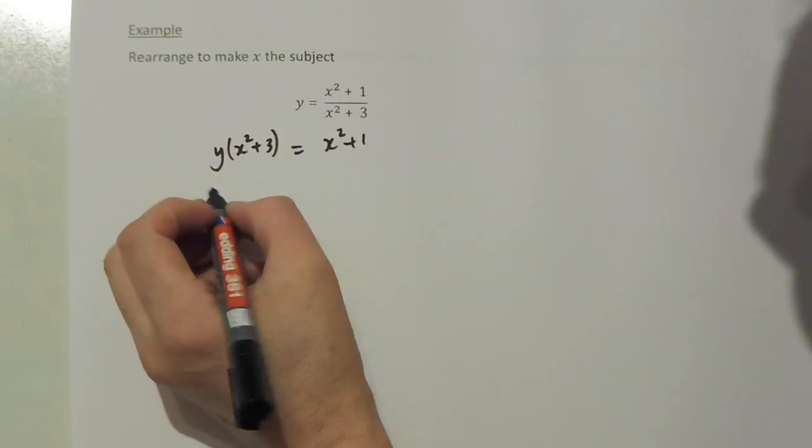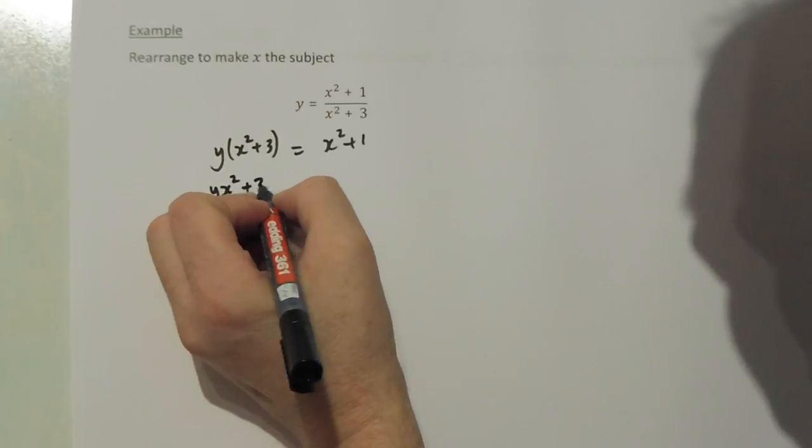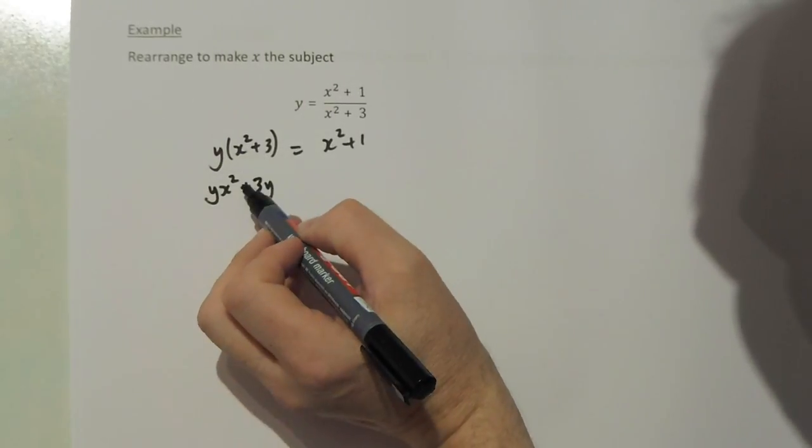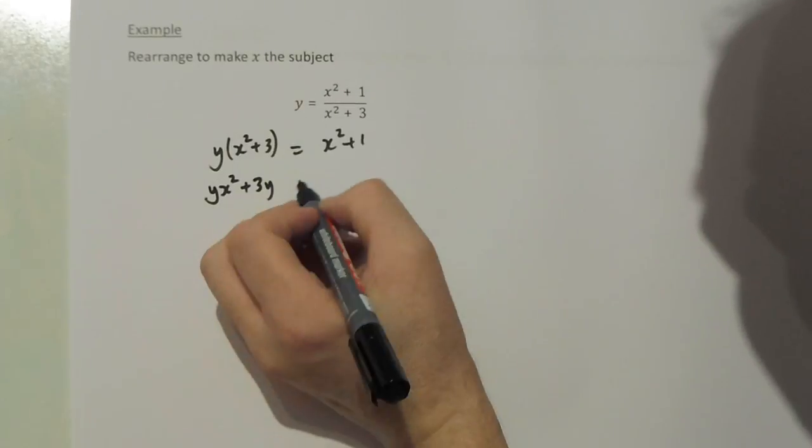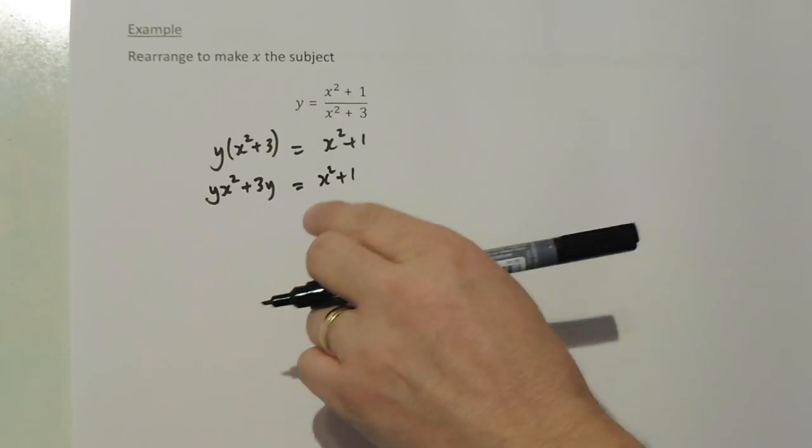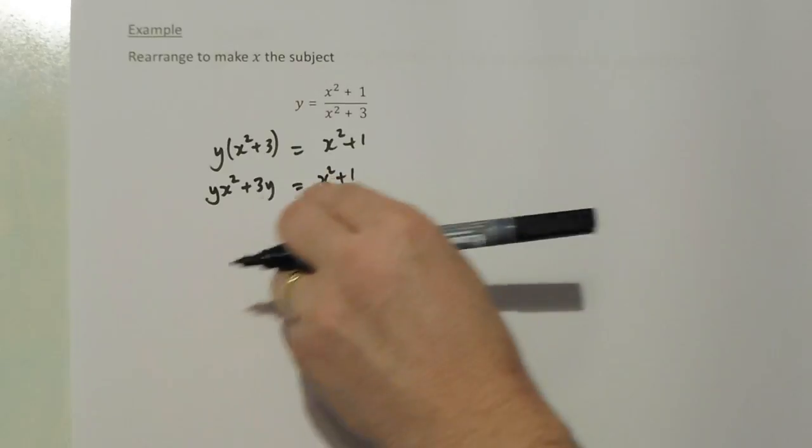Secondly, remove the brackets. So y times x squared plus 3 times y: y times x squared plus y times 3 should equal x squared plus 1. Next stage is to isolate the x values.